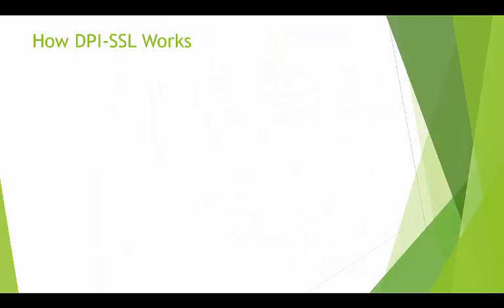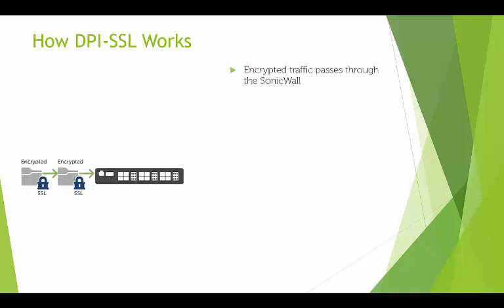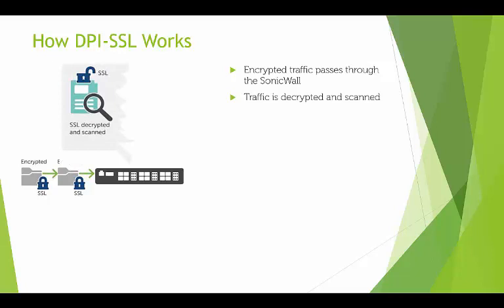Without getting into a technical deep dive, let's take a look at the way DPI-SSL works. The encrypted traffic passes through the firewall. Traffic is decrypted and scanned against SonicWall's gateway antivirus, intrusion prevention, gateway anti-spyware, content filtering, app control, and Capture ATP.